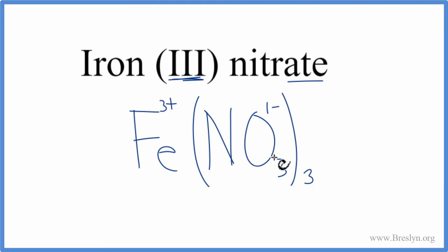So we have three of these nitrates, each one is 1-. Three times 1- is 3-. One times 3+ is 3+. So 3+ and 3- cancel out, giving a net charge of zero. This is the correct formula for iron three nitrate.